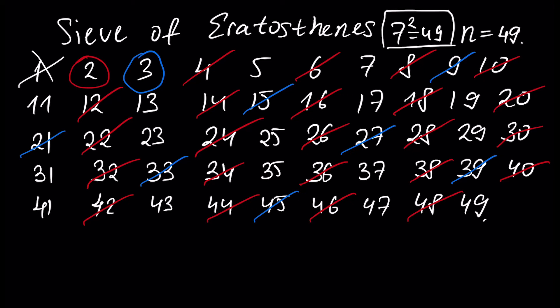Next, we take the next number which is not crossed out — number five — and this number five will be a prime number. By definition it is divisible only by one and number itself, five. It is not divisible by previous numbers two or three, because we already crossed out all multiples of those numbers. So we cross out all the multiples of number five: ten is already crossed out, fifteen is crossed out, twenty is crossed out, twenty-five, thirty is crossed out, thirty-five, forty is crossed out, forty-five is crossed out.